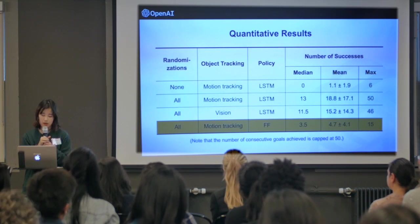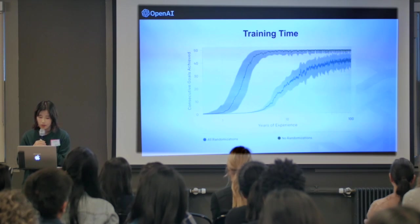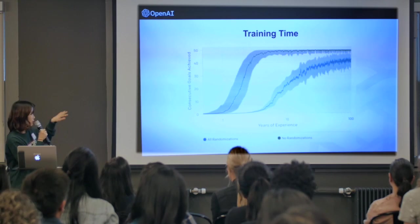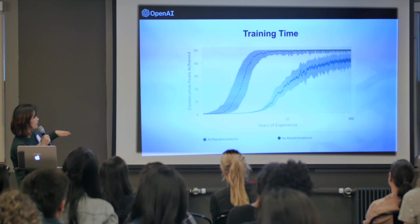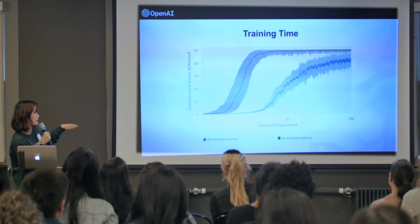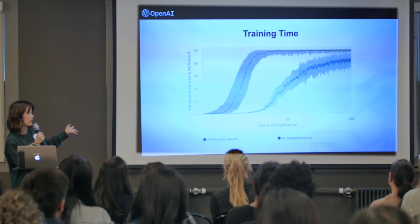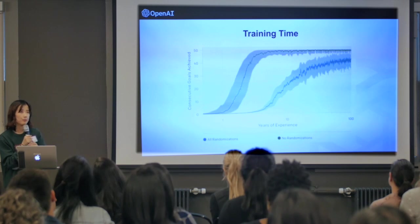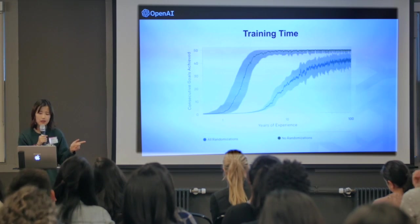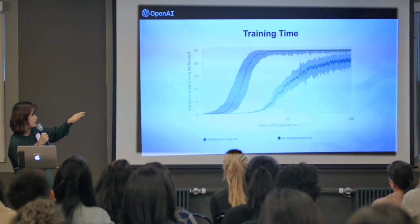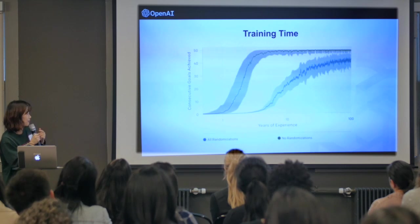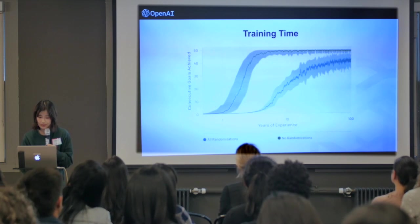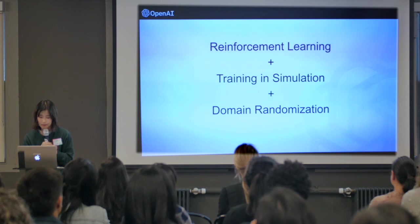However, training in randomized environments does come with a cost. We plot the number of successes in simulation as a function of simulated experience measured in years. Without randomization, the model can learn to achieve 40 successes with about three years of simulated experience. But to reach the same 40 successes in a fully randomized environment, it took a hundred years. So randomization greatly improves real-world performance but at significant training cost.